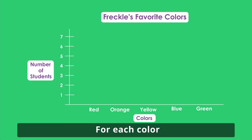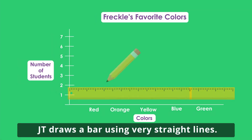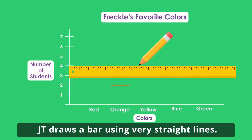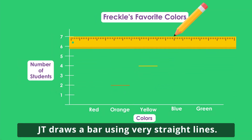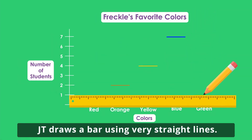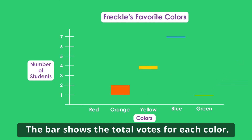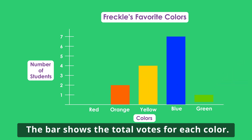For each color, JT draws a bar using very straight lines. The bar shows the total votes for each color.